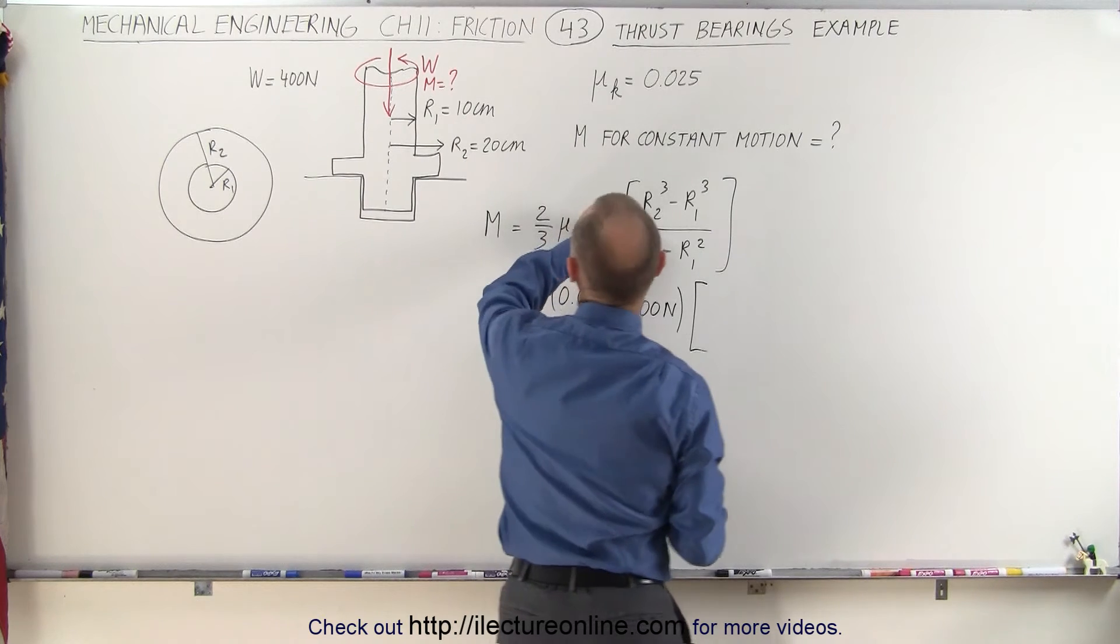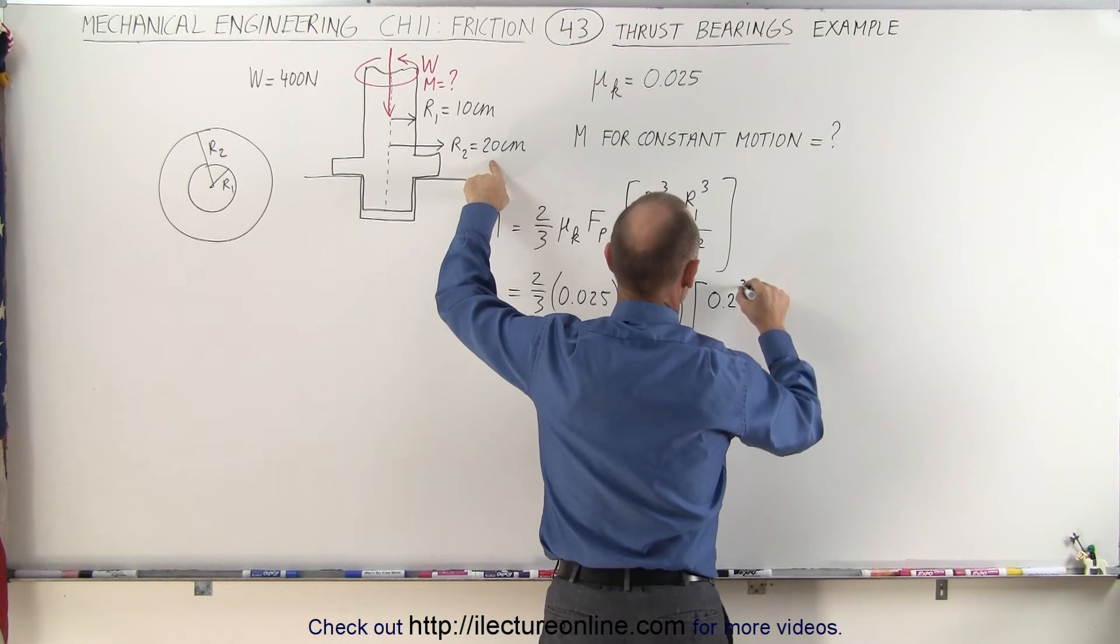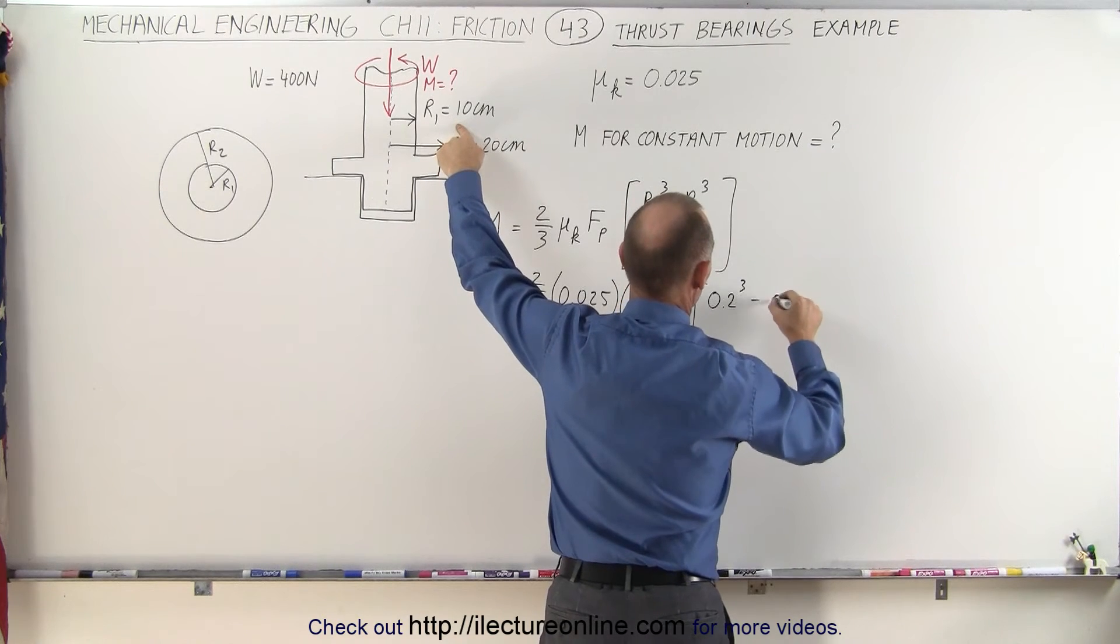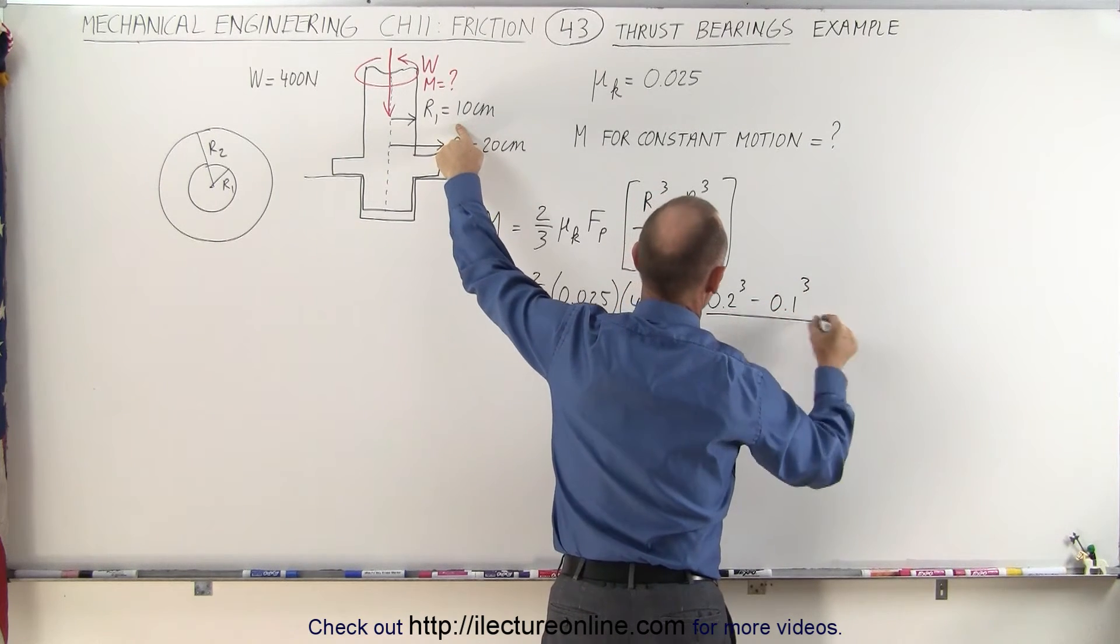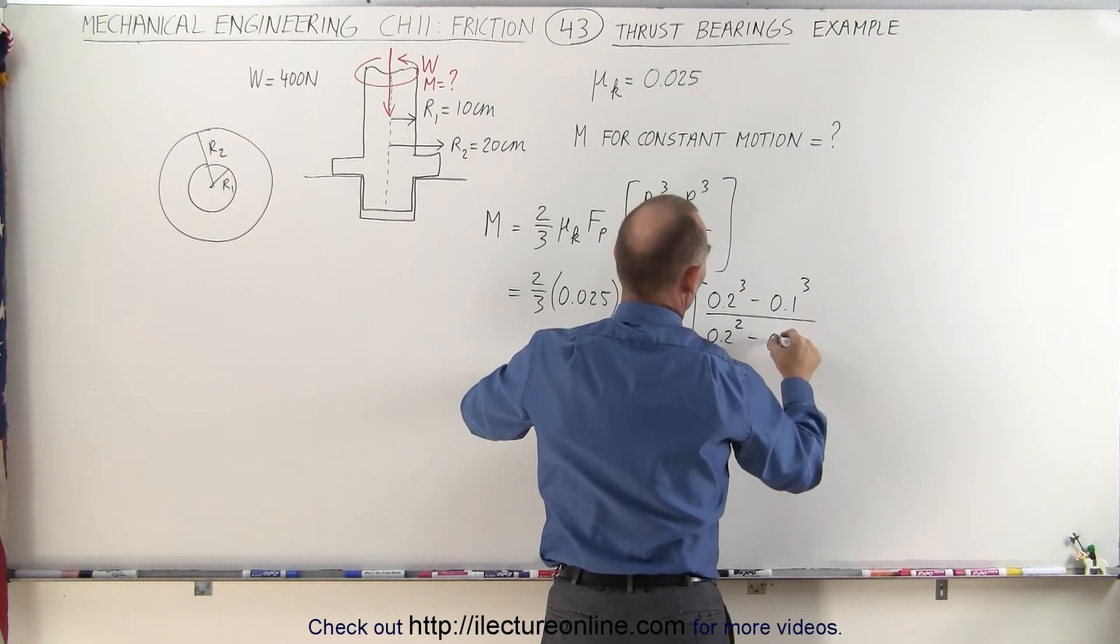times r2 cubed, now r2 is 20 centimeters, or 0.2 meters, we have to cube that, minus the inner radius, 0.1 cubed divided by 0.2 squared minus 0.1 squared.